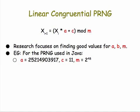For example, the PRNG used in the Java programming language, or in some implementations of it, uses a big number for A, uses 11 for C, and 2 to the 48 for M. That means you're going to have very long sequences of very big numbers before they repeat themselves.